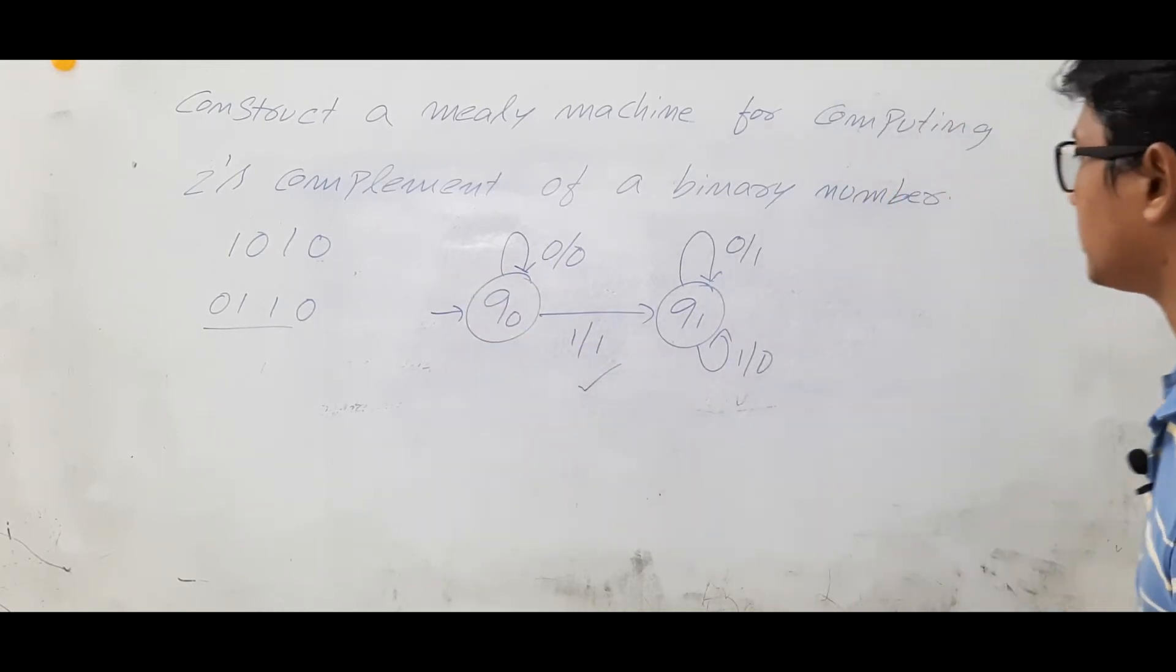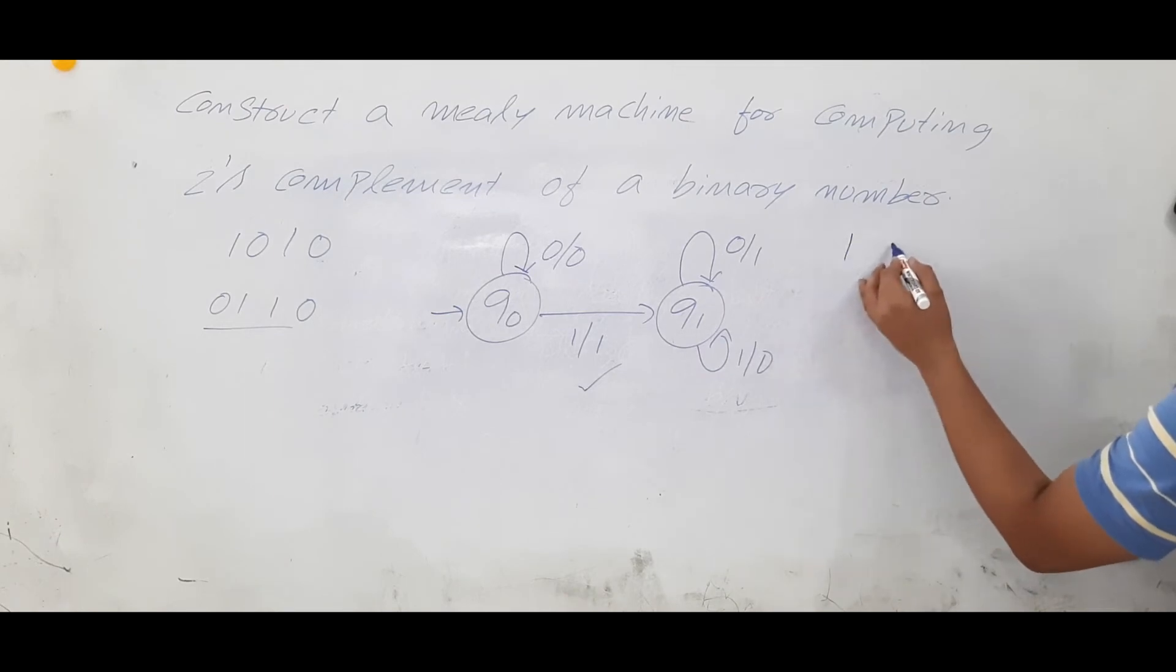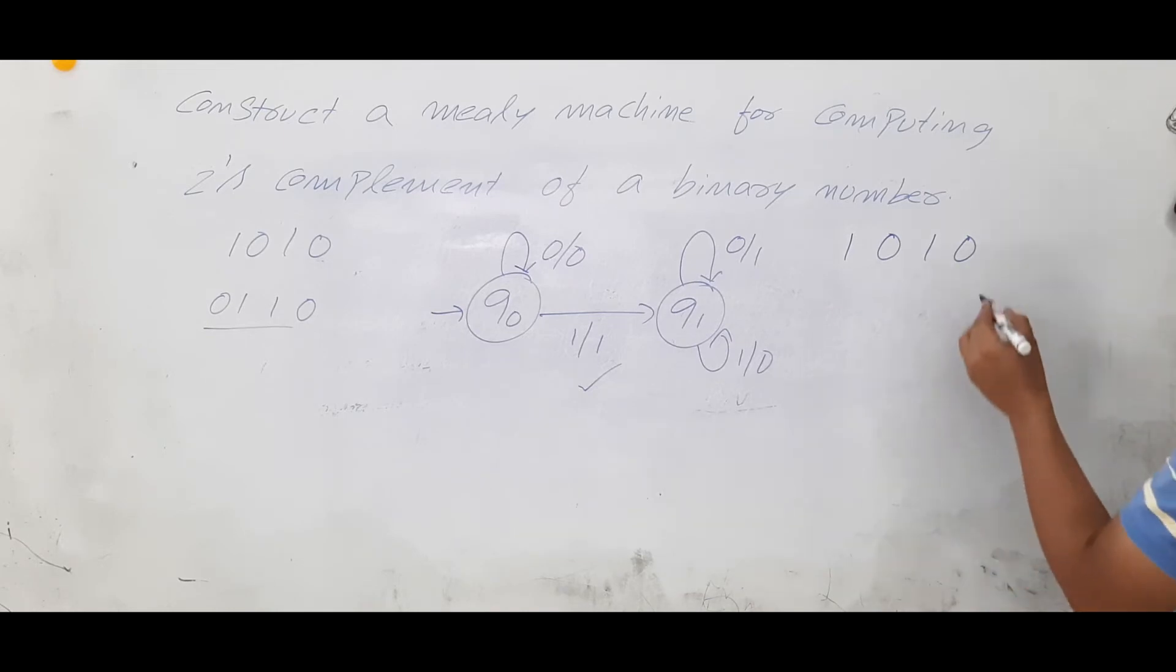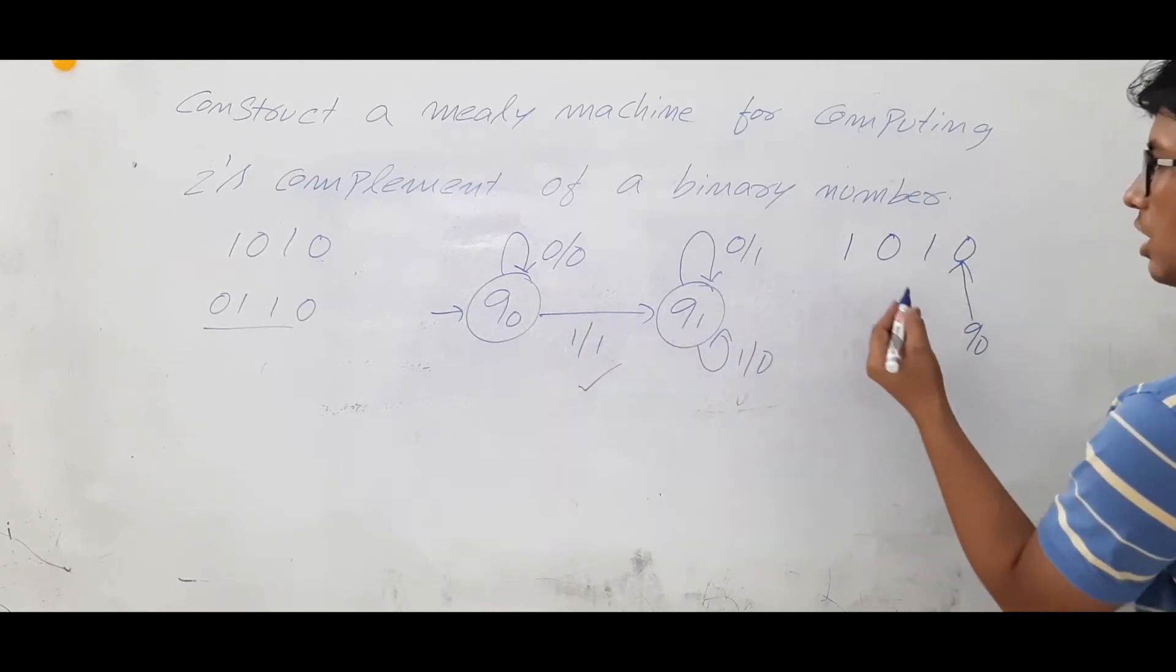Whether it is correct or not we will check it. We will take an input as 1 0 1 0. So I need to read the input from the leftmost bit. I am in initial state q0.